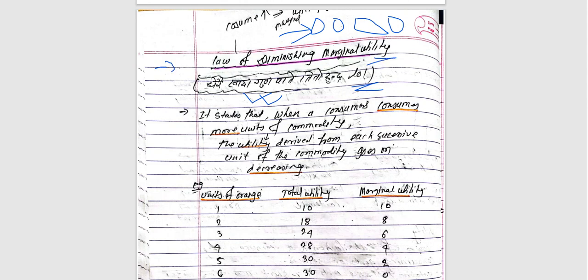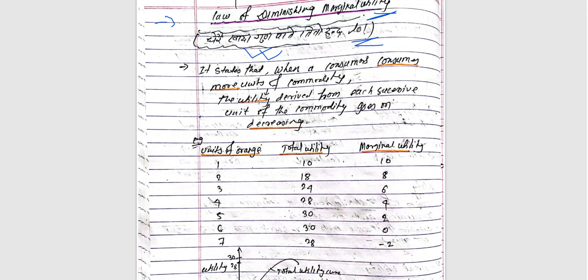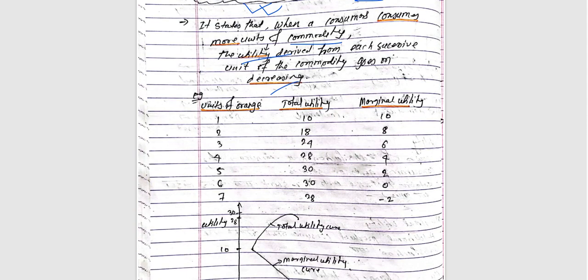The law of diminishing marginal utility states that when the consumer consumes more units of a commodity, the utility derived from each successive unit goes on decreasing. For example, the utility from the first unit may be 10, the second also 10, but then it decreases to 8, and continues to diminish.